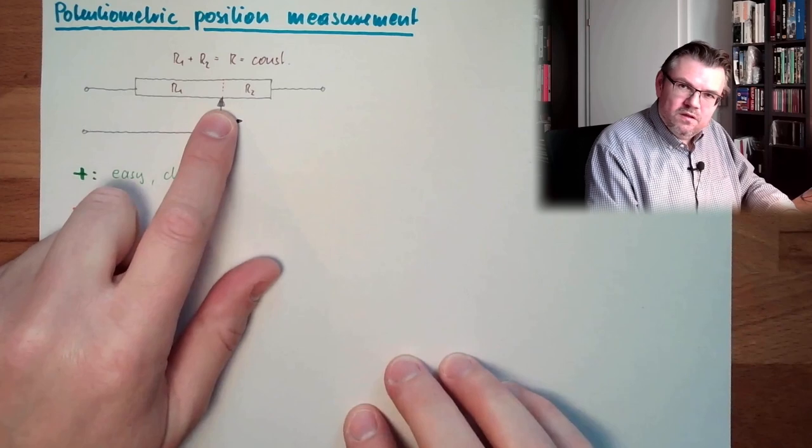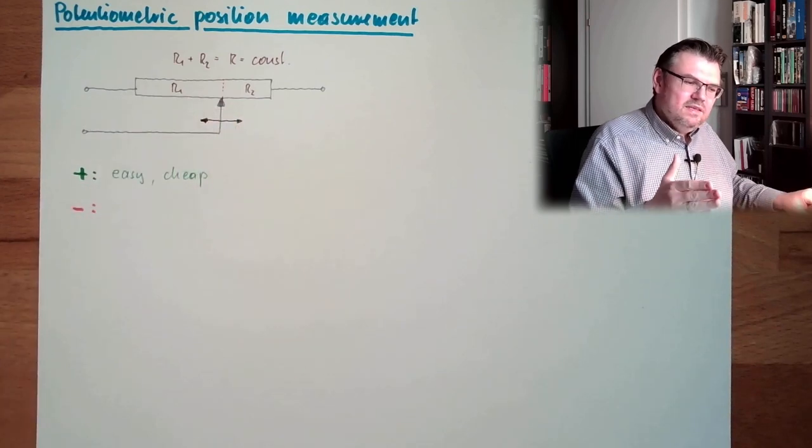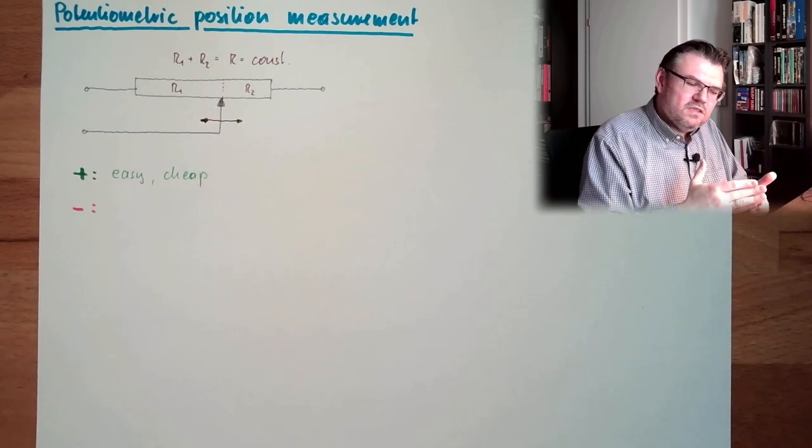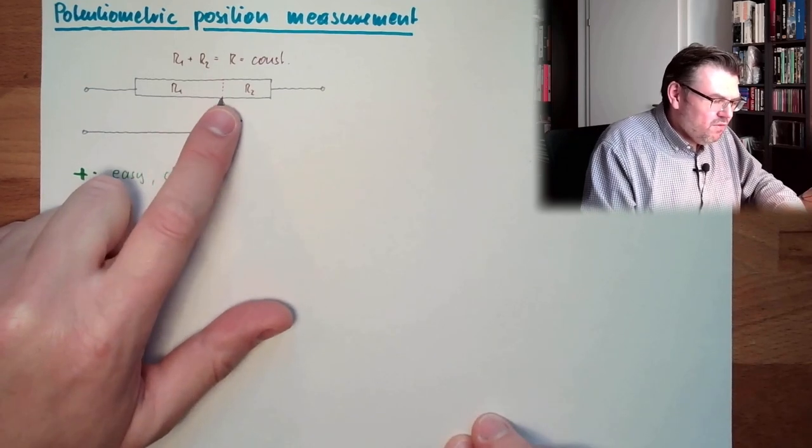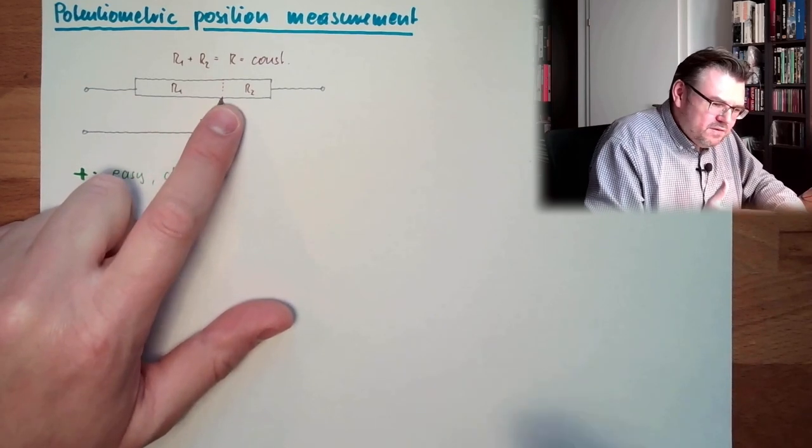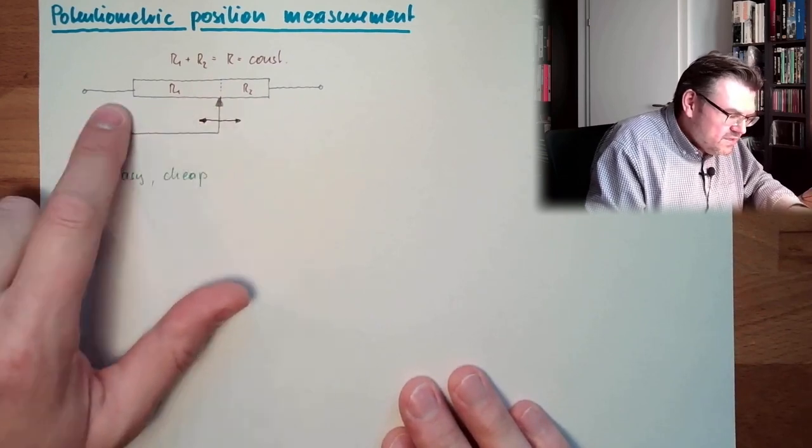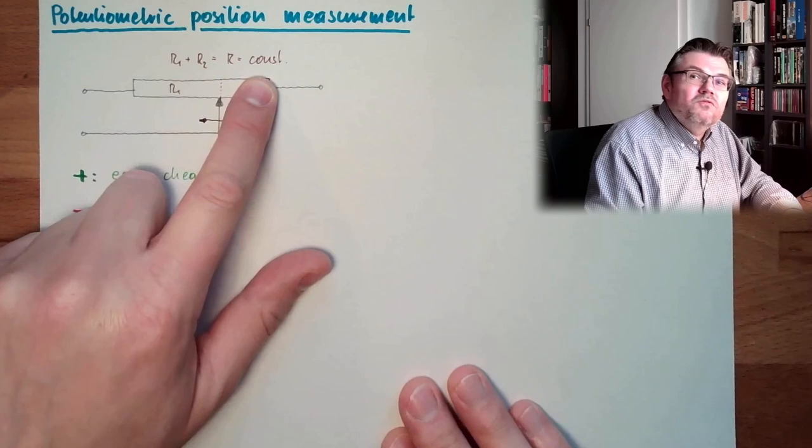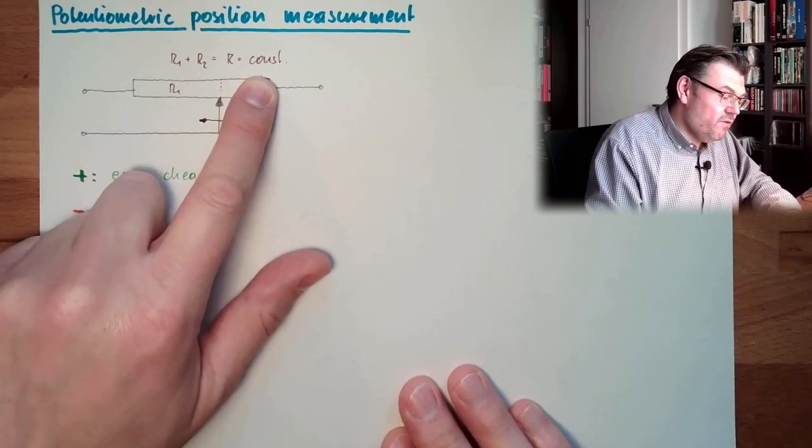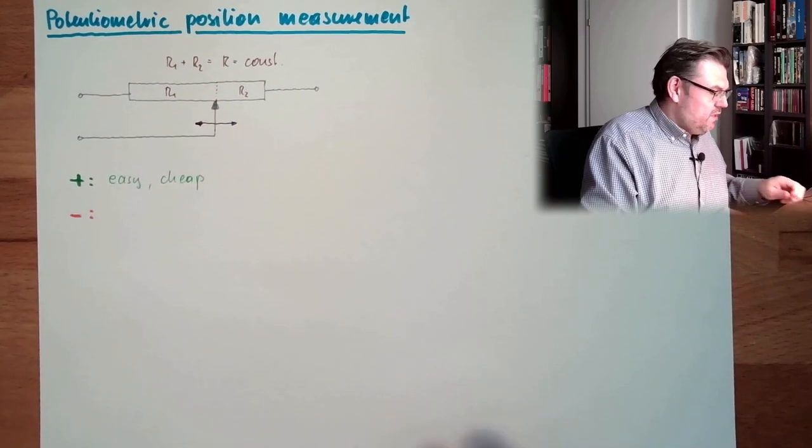This is a touch and contact. And this touch and contact is scratching across a surface. And so you will rip off or shovel off. Just there is wear on this track. So over time, you will influence this R. This is not really constant. You will influence it. So there is wear.